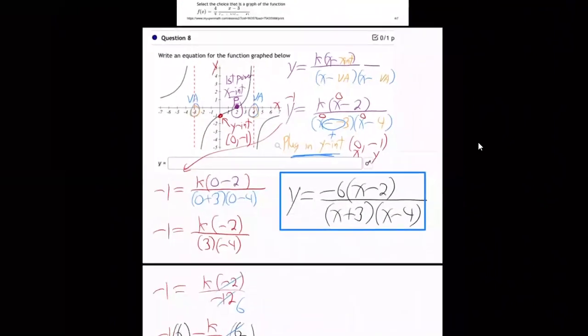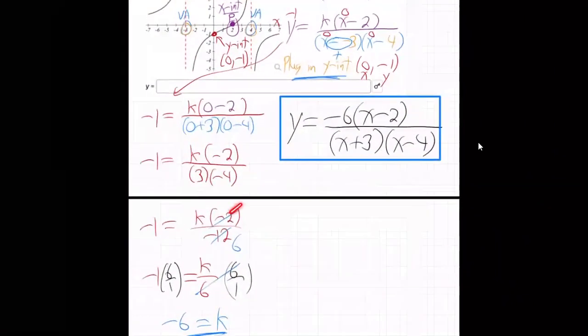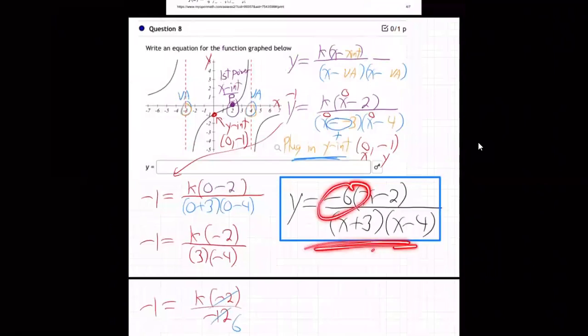So again, recapping, how did we do it? We observed the two vertical asymptotes and the x-intercept. Vertical asymptotes go behind an x minus on the bottom. The x-intercept goes behind an x minus on the top with a k on the top as well. And then we observed the y-intercept, zero, negative one. Plug that in. Zero for x everywhere, negative one for y. We get this equation and then we have to solve. So we work it out. Here we cancel. Negative two into negative 12 six times. It's k over six. And then multiply both sides by the upside down, six over one. And negative one times six over one is just negative six. So k is negative six. Put the k in as negative six. There is our equation. There is our equation. All right.